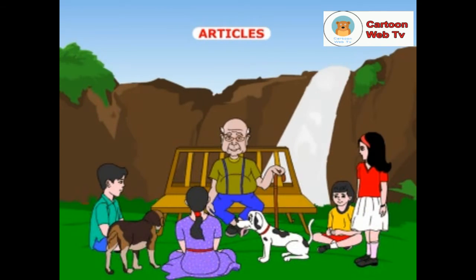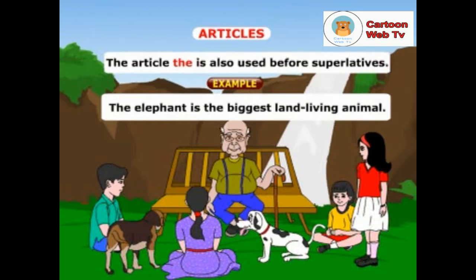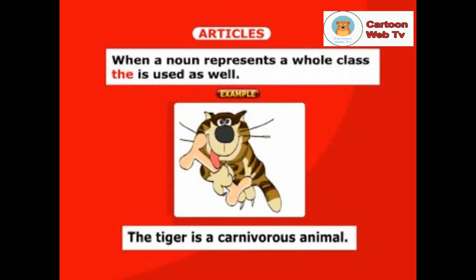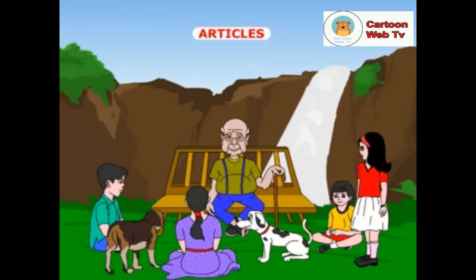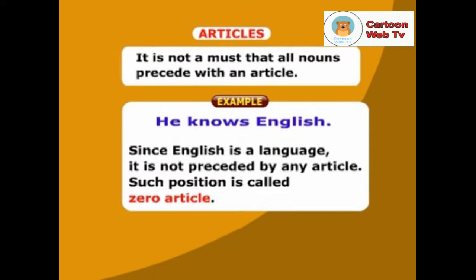Are there any other occasions the article the should be used? The article the is also used before superlatives. Example: the elephant is the biggest land living animal. When a noun represents a whole class, the is used as well. Example: the tiger is a carnivorous animal. Remember, children, it is not a must that all nouns proceed with an article. Look at this sentence as an example: he knows English. Since English is a language, it is not preceded by any article. Such omission is called zero article.